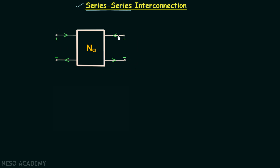Port number 2 is the output port. The voltage at the input port is V1A and the voltage at the output port is V2A. The input current is I1A, and the same current will leave the two-port network from the second terminal of the input port. The output current is I2A, and the same current will leave from the second terminal of the output port.